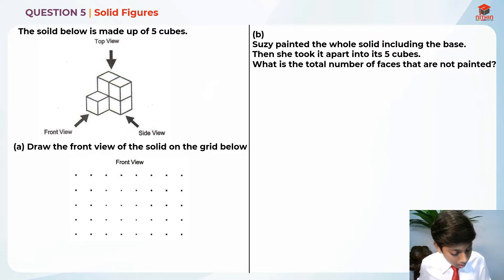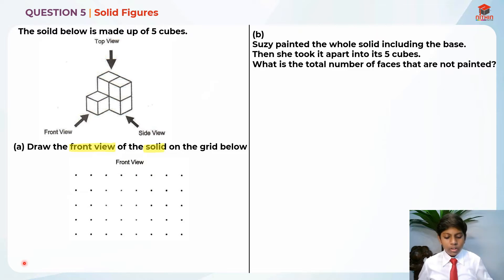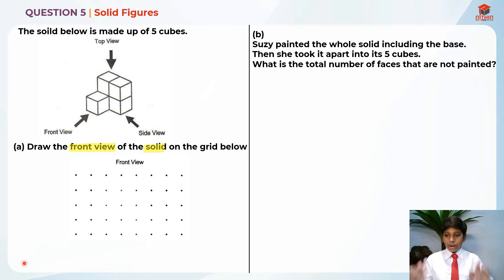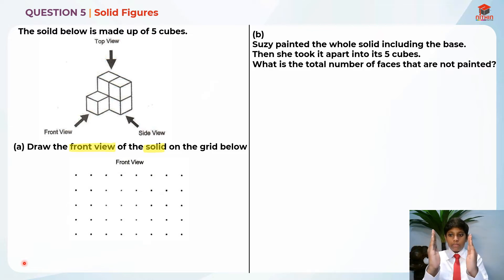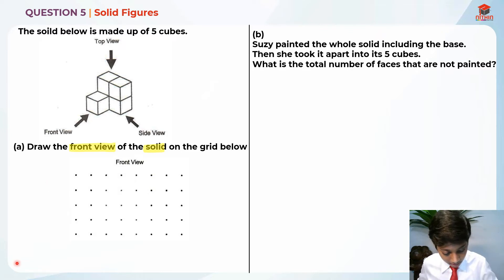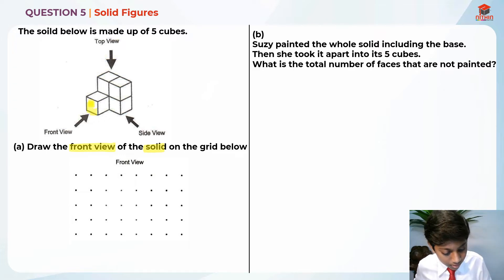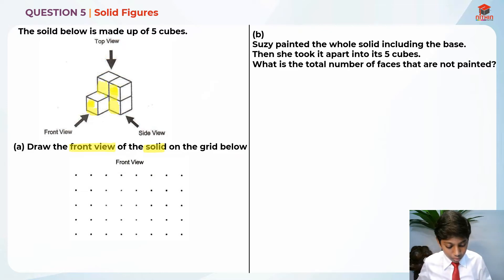They are asking us to draw the front view of the solid. In order to draw the front view, let me show you. The front view is like this — it's sideways. So basically we need to turn it around and make it face us. When we make this solid face us, we will only be able to see these faces over here. So these four faces — the front view should be something like this: a square.